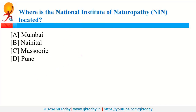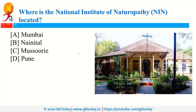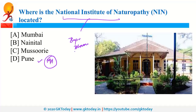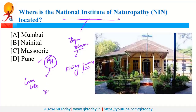Where is the National Institute of Naturopathy located? This institute is in Pune, Maharashtra. The present building is known as Bapu Bhavan. Recently, the Ayush Ministry proposed that a new campus of this National Institute of Naturopathy should be named Nisarg Gram. Recently, Maharashtra was also in news because of Lonar Lake, the Buldhana Pattern, and the 'My Family, My Responsibility' campaign.